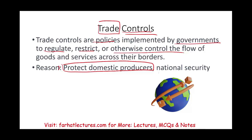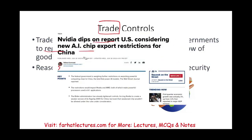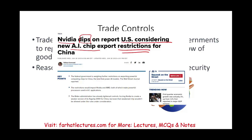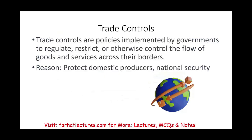Another reason for placing those controls is national security. A recent example is NVIDIA, the company that produces artificial intelligence chips for computers. The stock price dipped on the report that the US government is considering restricting the export of those chips to China. The point is, this is for national security reasons — the US told NVIDIA not to sell, placing a restriction on exports. Usually restrictions are on imports, but notice here it's on export. You could have those restrictions for export as well, though that's not very common.